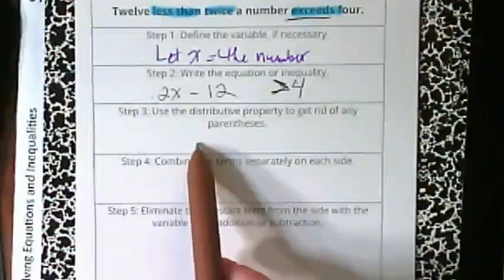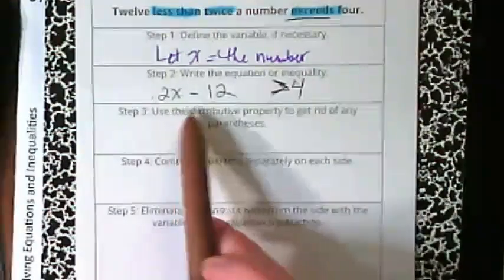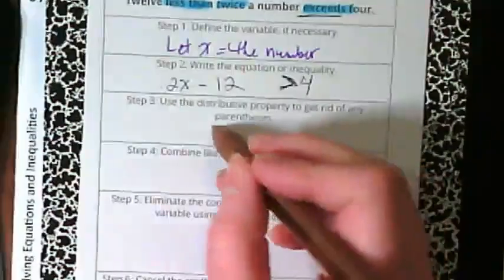Step 3 says use the distributive property to get rid of any parentheses. Do we have any parentheses or distributive up here? No. So we can cross this one out.